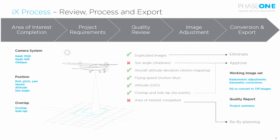Let's wrap up what we have reviewed in IX Process today. IX Process allows you to review your mission data, adjust your images, and export in the standard TIFF format. You can eliminate duplicated lines, approve or reject images based on sun angles and overlap requirements, and if you have missing lines that are not completing your area of interest, you can create a reflight plan directly and IX Flight Pro will be able to take it directly. Thank you for joining our webinar today. If you have questions or feedback, please contact us at geospatial.phase1.com. We hope to see you in upcoming webinars.